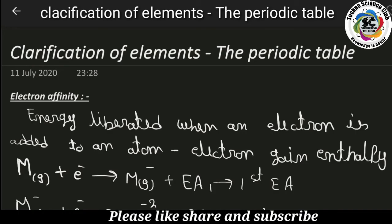Welcome back friends. Classification of elements in the periodic table — in this lesson, the next topic is electron affinity. Properties of elements covered so far include valency, atomic radius, and ionization energy. Now the next property of elements is electron affinity.